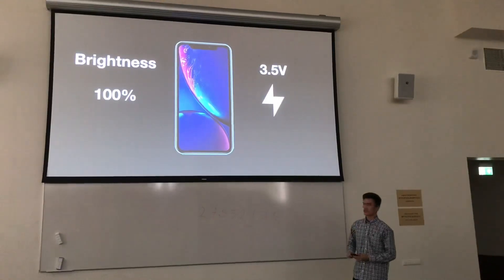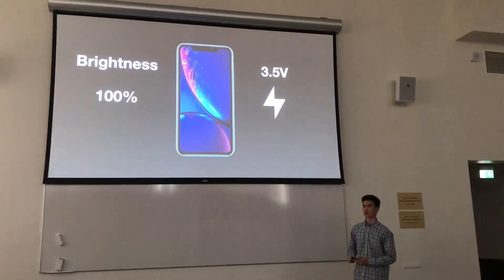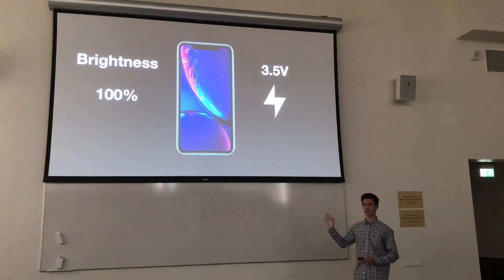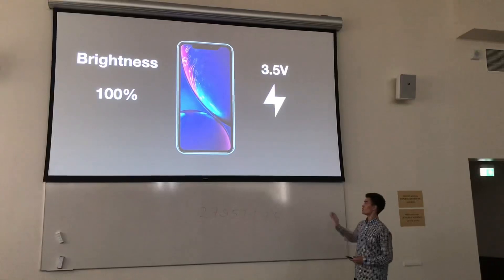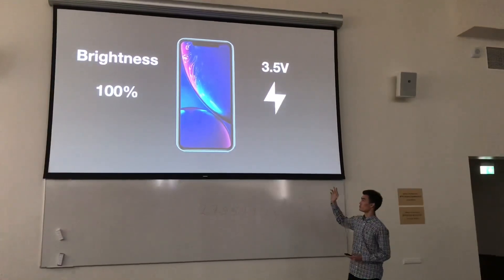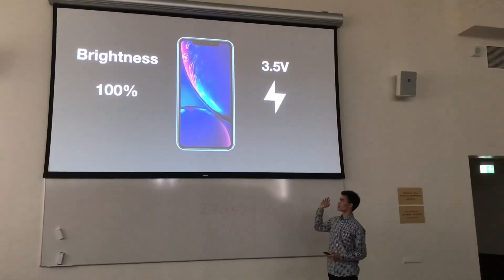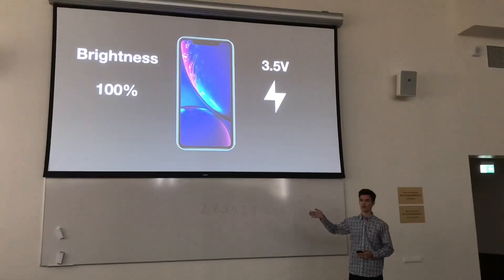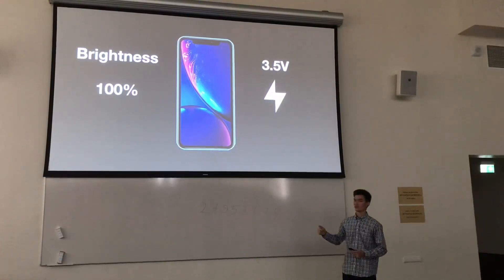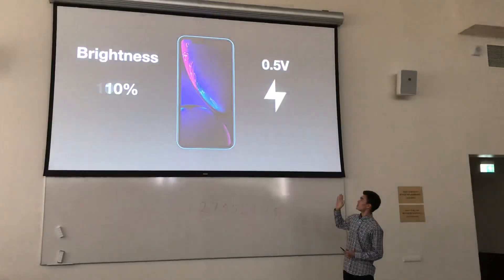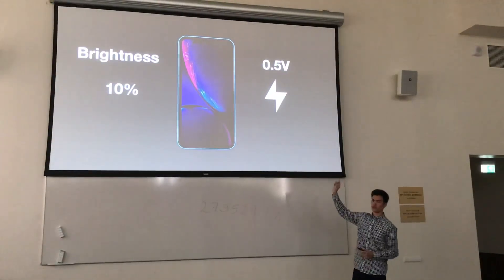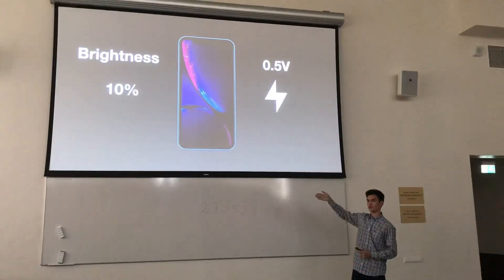The working current for the display is around 3.5 volts. When we get 3.5 volts into the display, the brightness is set to 100%. When we lower the brightness on an LCD, we actually lower the voltage, and the screen gets dimmed.